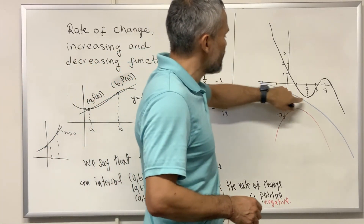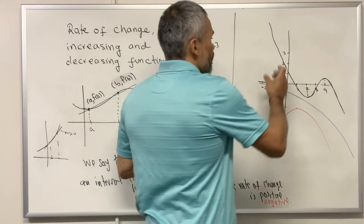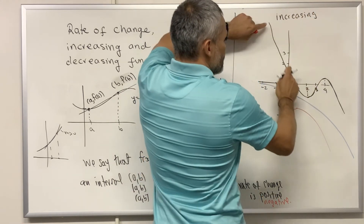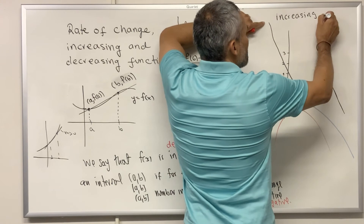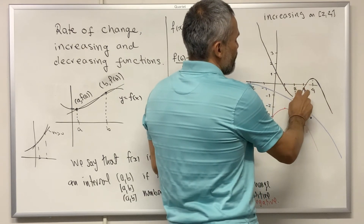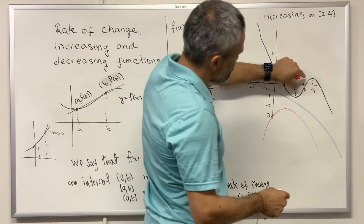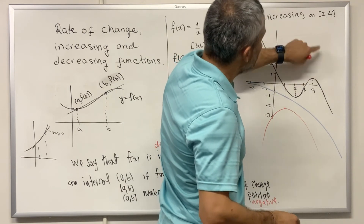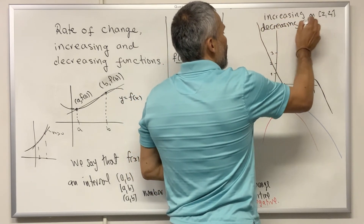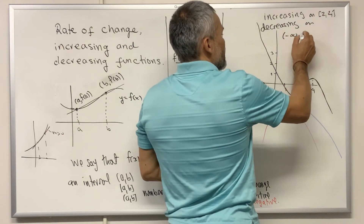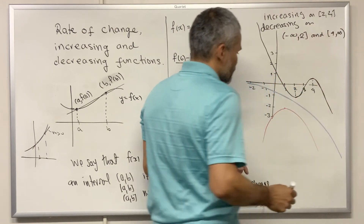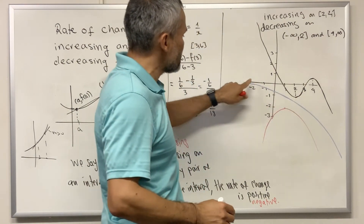Let's see some examples. For this function, we can say that the function is increasing on the interval (2, 4). Notice that for every pair of numbers between two and four, when we compute the average rate of change it is going to be positive. And it is decreasing on the intervals negative infinity to two and four to infinity.